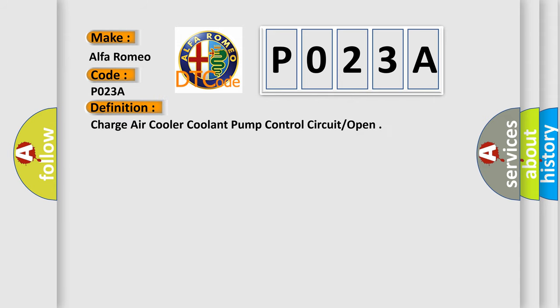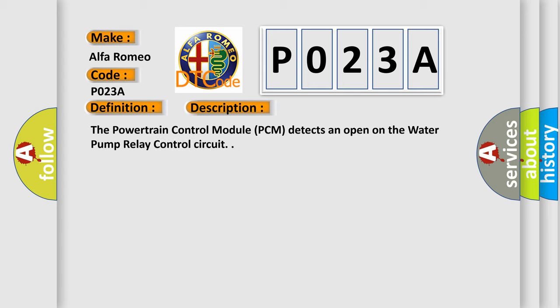The basic definition is Charge air cooler coolant pump control circuit or open. And now this is a short description of this DTC code. The powertrain control module PCM detects an open on the water pump relay control circuit.